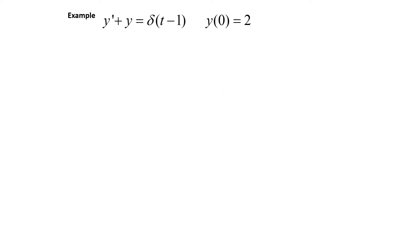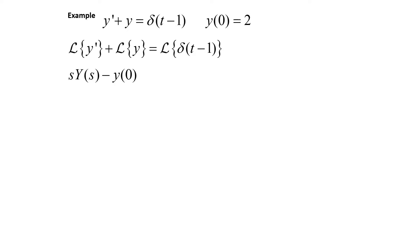For a second example, we have y prime plus y equals the Dirac delta function of t minus 1, with initial condition y(0) equals 2. Again, we'll start by taking the Laplace transform of all terms. So the Laplace transform of y prime plus the Laplace transform of y equals the Laplace transform of delta of t minus 1. This gives us s times Y(s) minus y(0) plus Y(s) equals e to the negative s. Our initial condition y(0) equals 2, so we plug that in, giving us s·Y(s) minus 2 plus Y(s) equals e to the negative s.